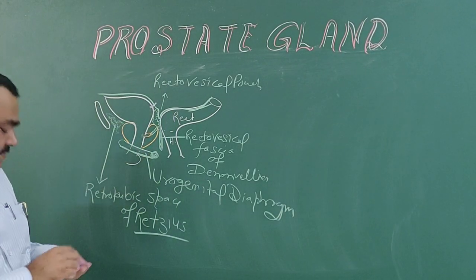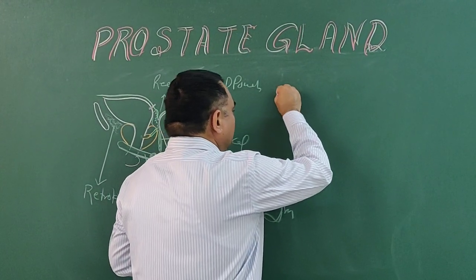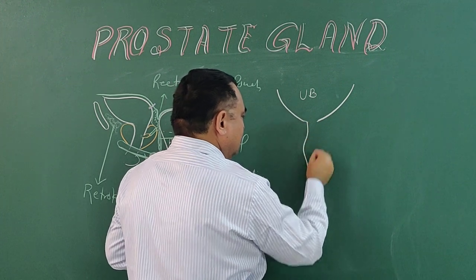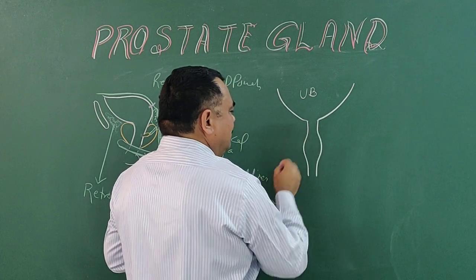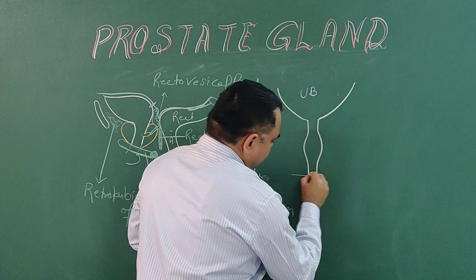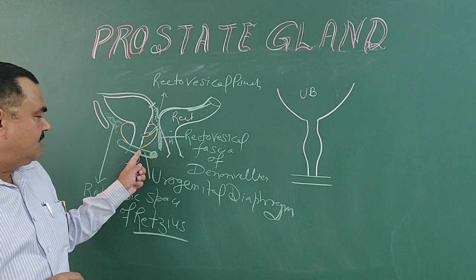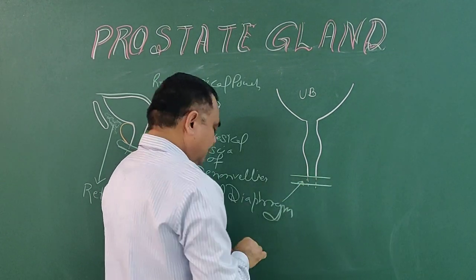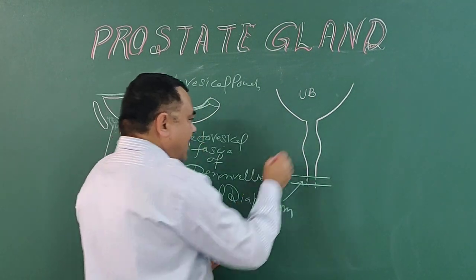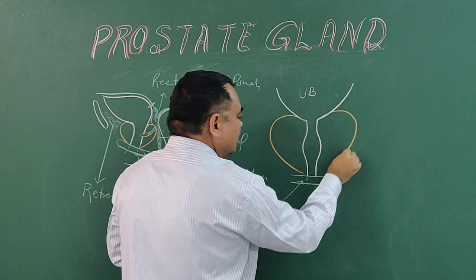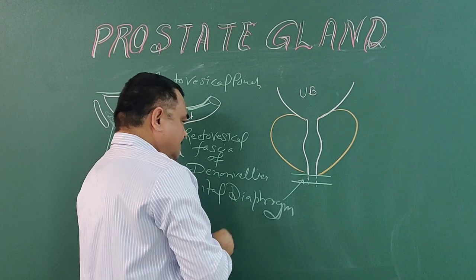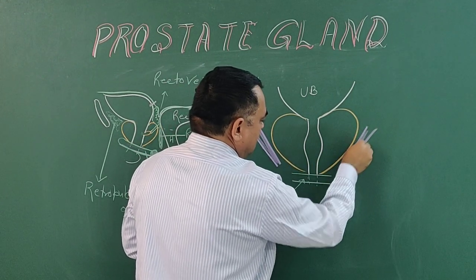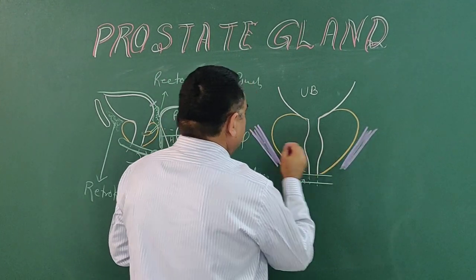This is a coronal section. If you see in the coronal section, you will find the urinary bladder, and here is the prostatic part of the urethra. This is the urogenital diaphragm. Here lies the prostate. And after this, here lies the levator ani muscle — this is the levator ani muscle.